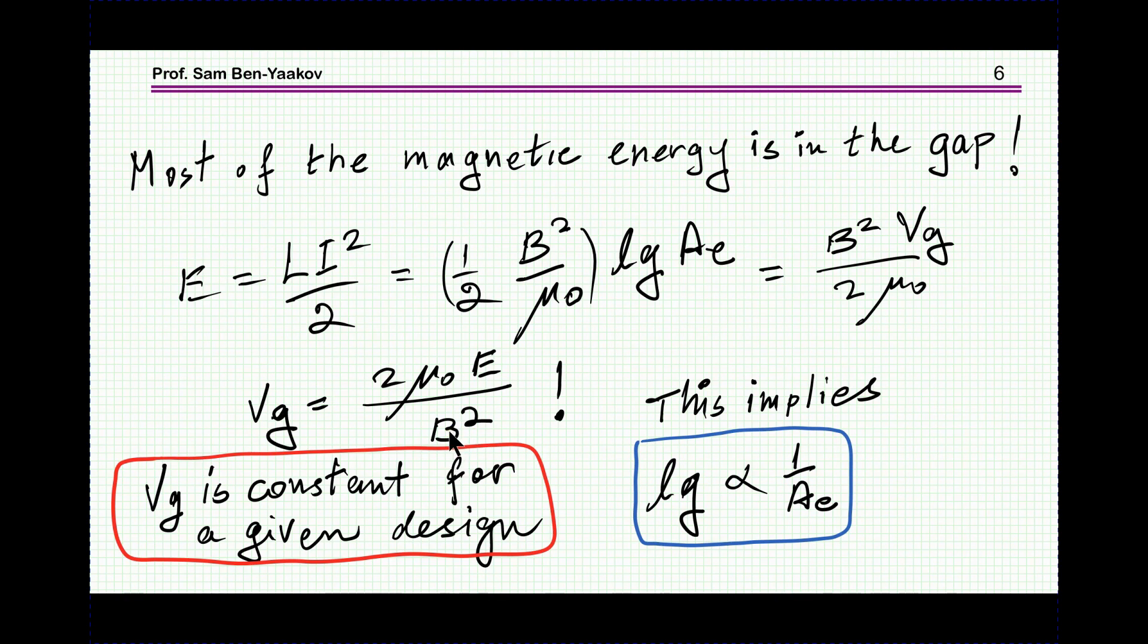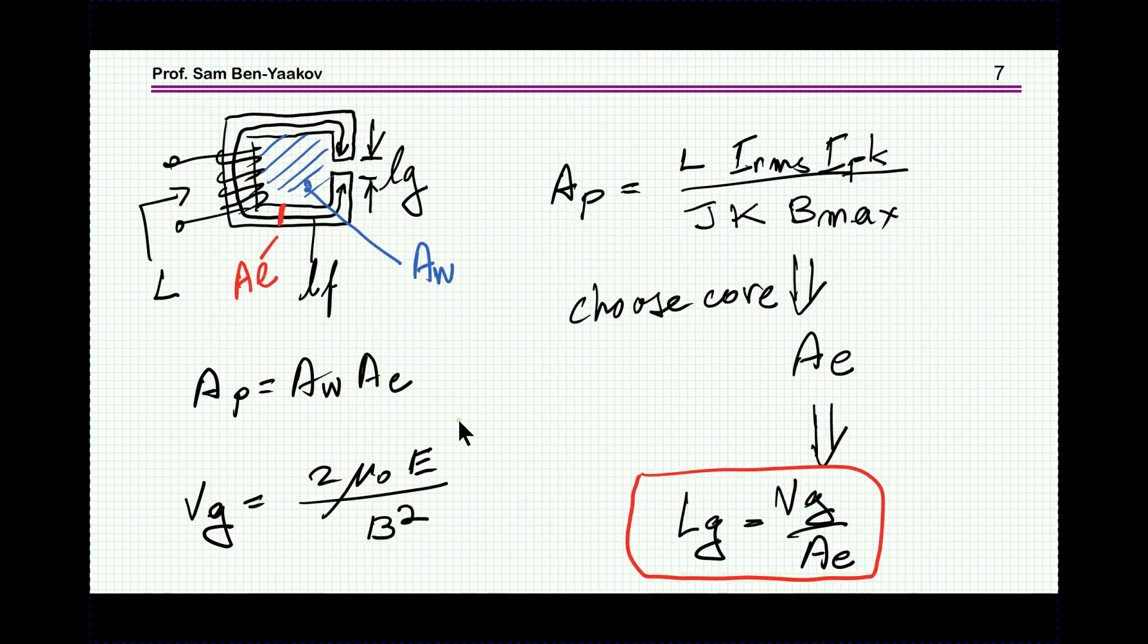If we go through the design based on the AP approach, which is AP is the product of the cross-section area times the winding area, we know all these from the design constraint: the inductance, Irms, Ipk, J is the current density within the wires, K is the packing factor.